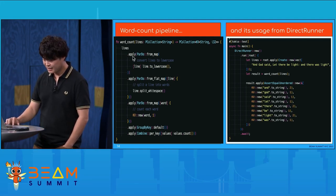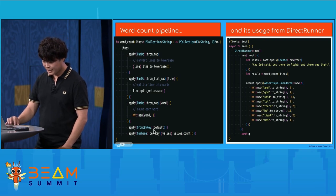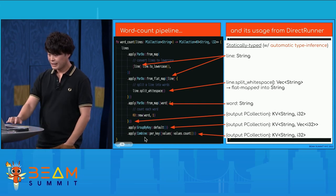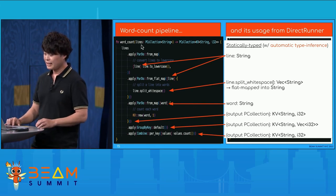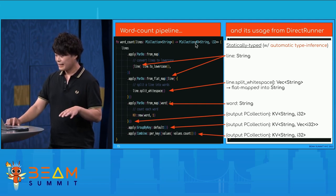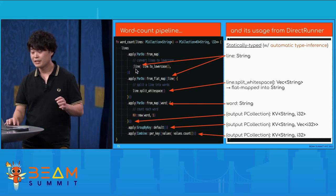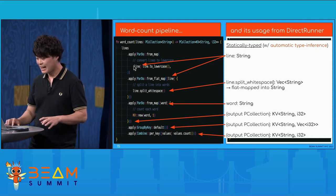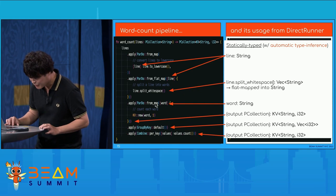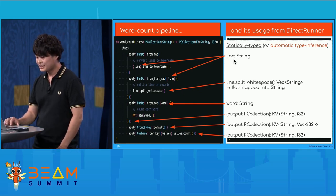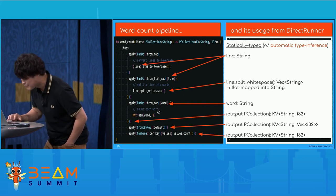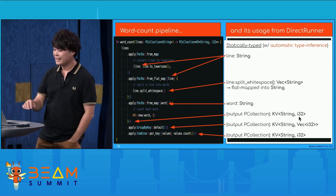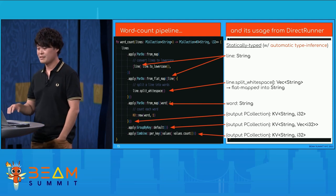The line takes an apply method chain. The apply method takes a PTransform like ParDo and GroupByKey combined. For the statically typed feature, especially automatic type inference through the Rust compiler, this function explicitly has a type here and here, so the Rust compiler can infer the intermediate variable types like line, word, and the result of the from_map here. For example, this line will be inferred as string by the Rust compiler, and the result type of this from_map is KV of string and i32, an integer — just automatically inferred by the Rust compiler.